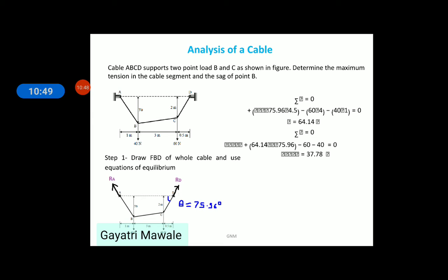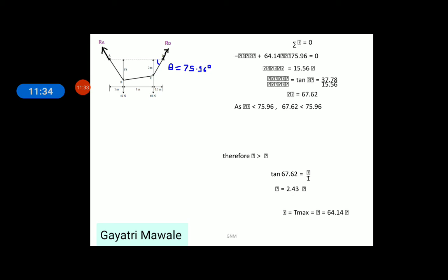If you solve this equation, it will give you value of RD as 64.14 N. Then, use second equation of equilibrium summation Fy equals to 0. Again, looking at the FBD, we can write RA sine theta plus RD that is 64.14 sine 75.96 minus 60 minus 40. This is equals to 0. Solve this equation of vertical forces and you will get RA sine theta equals to 37.78.